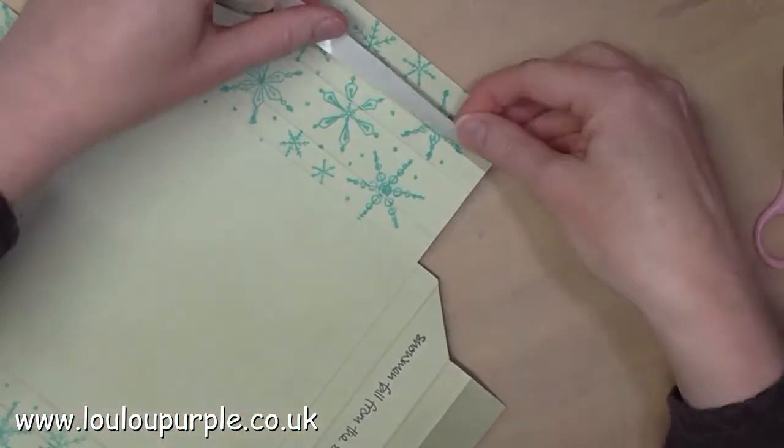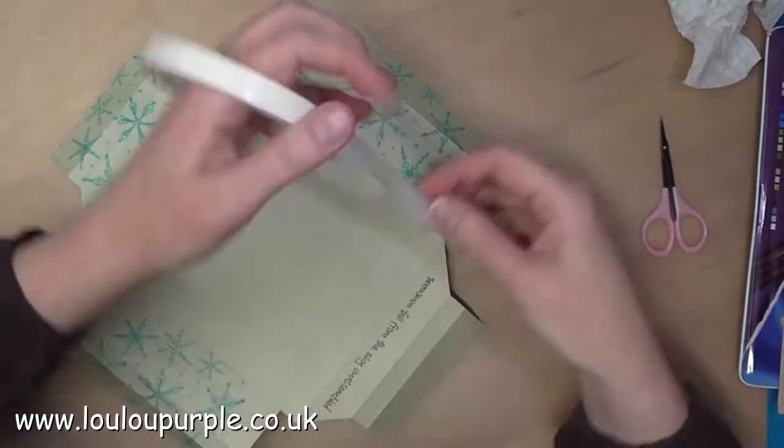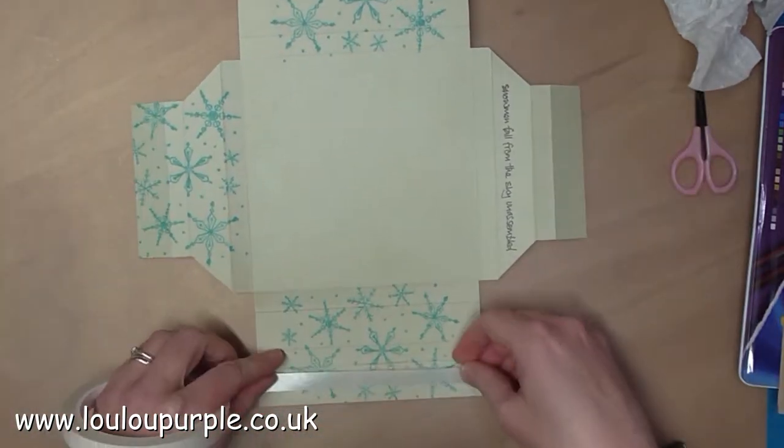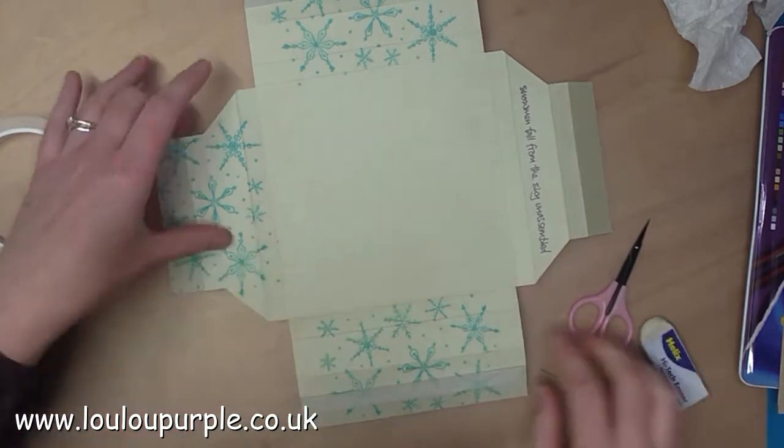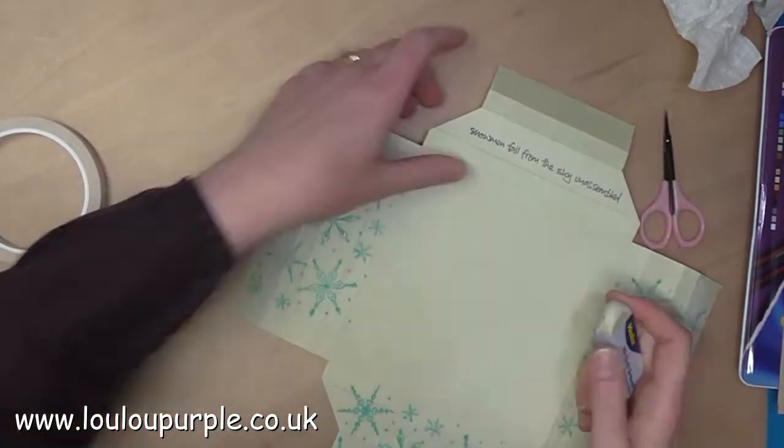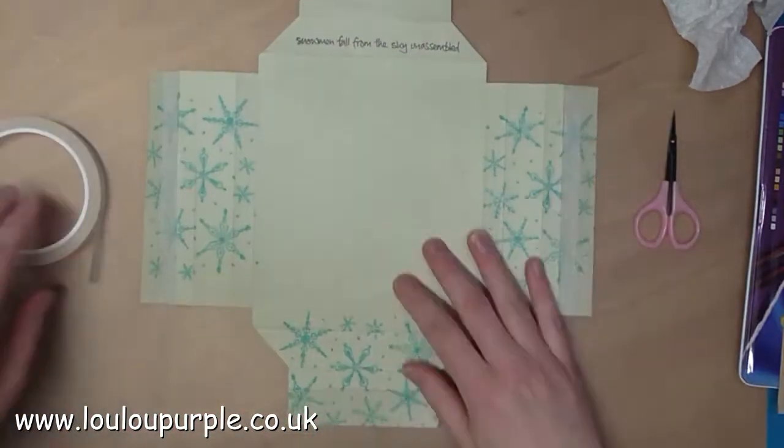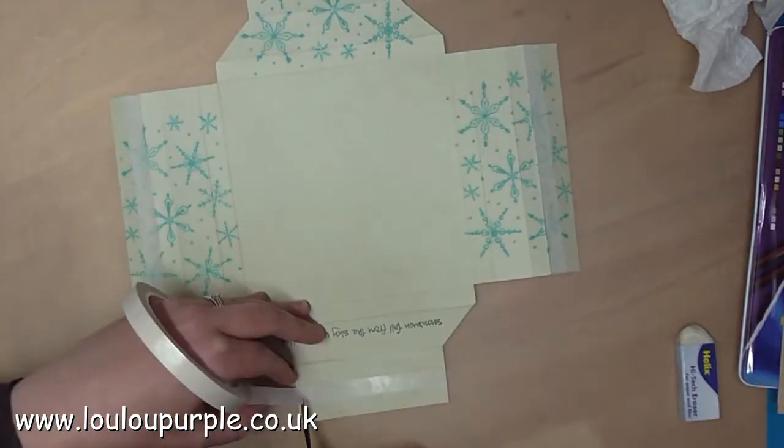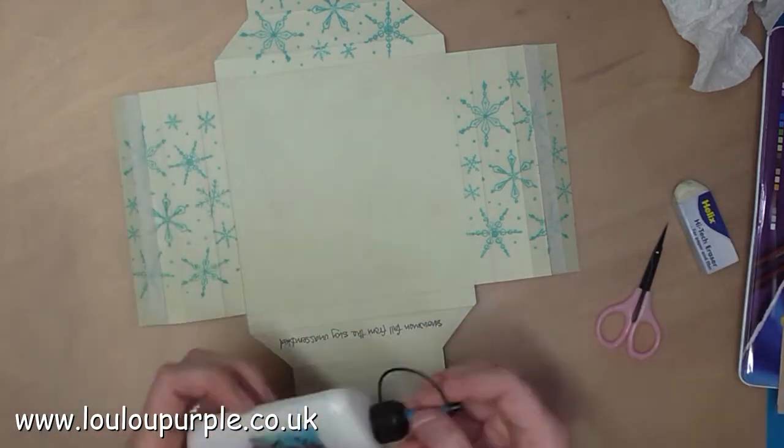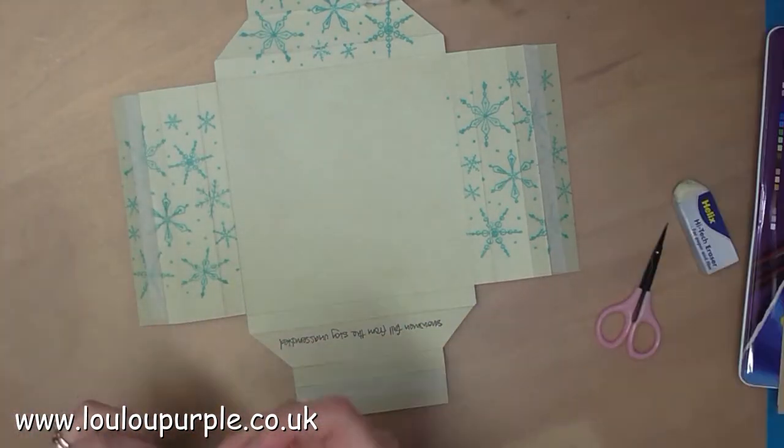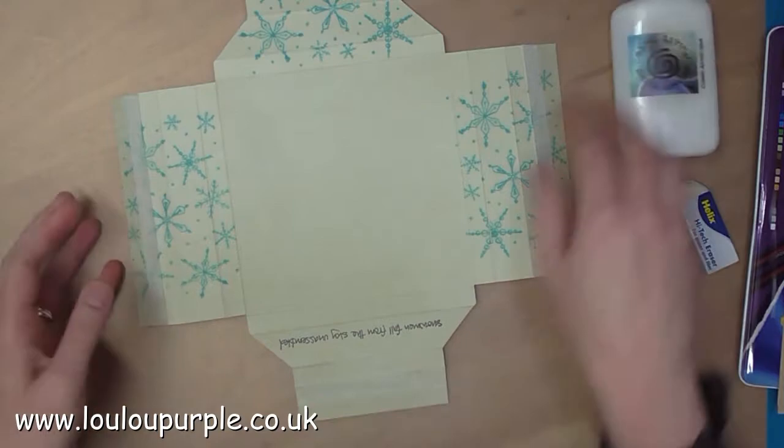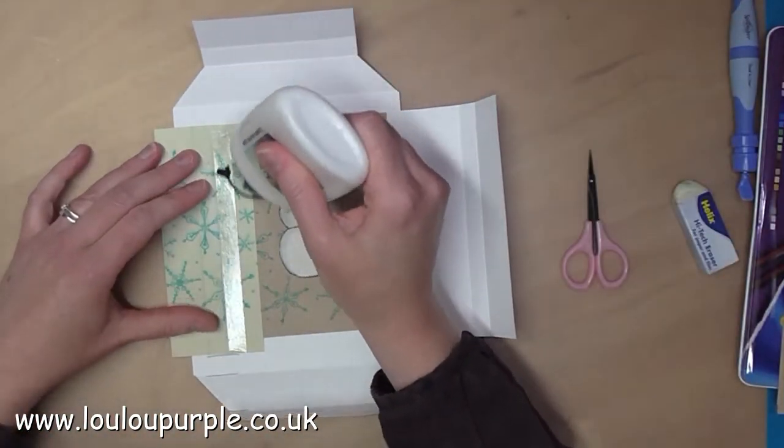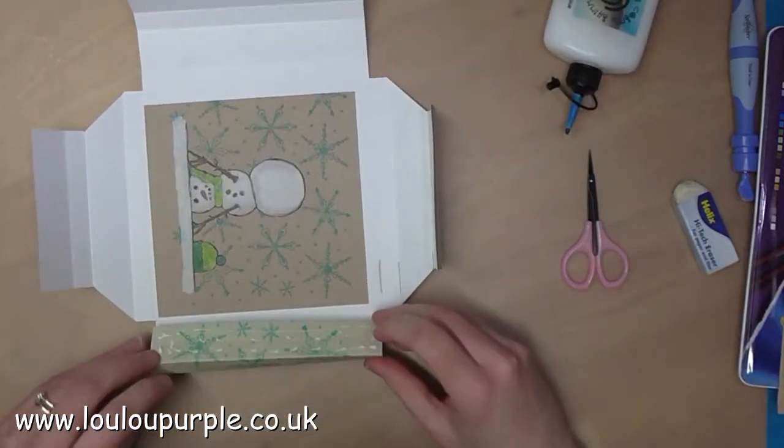I then turn it over and use some double sided tape on the outer edge of all four sides. I am now going to use my Cosmic Shimmer acrylic glue as well, so the tape will hold it in place to start with and the glue will make it stronger.